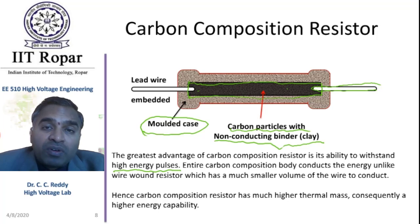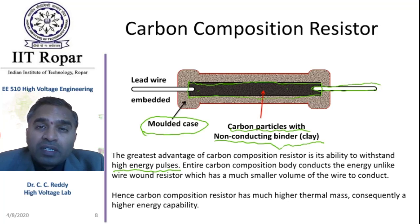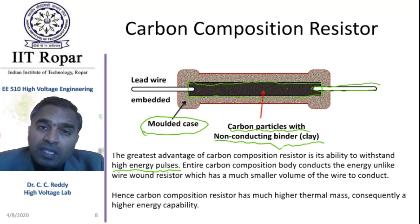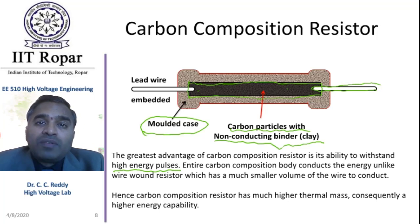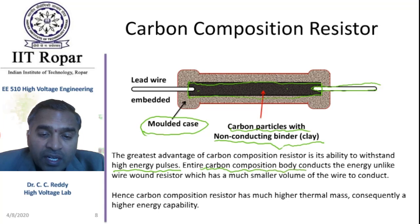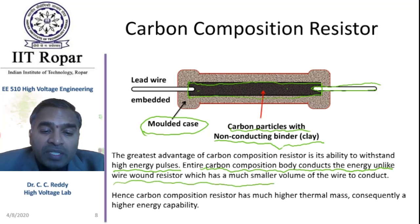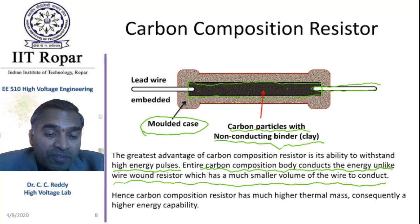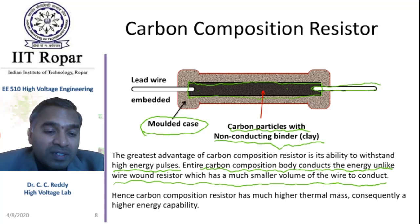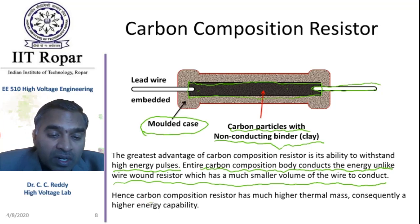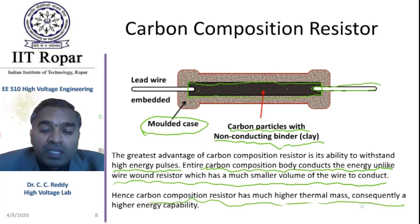The difference compared to wire wound resistors is: in the wire wound case, only the resistive wire is the source of heat generation, and that wire alone will conduct heat — it is localized. But in the carbon composition case, the entire carbon body conducts the energy — heat energy — unlike the wire wound resistor, which has a much smaller volume of wire to conduct. This is the main difference. That is why it has high energy density. It can withstand high voltage pulses. Hence, carbon composition resistors have much higher thermal mass, and consequently, high energy capability.